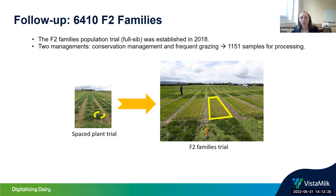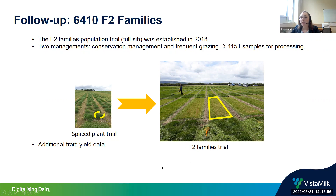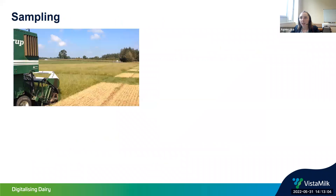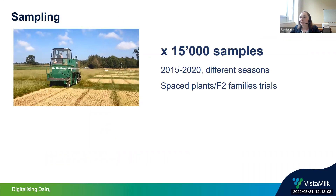We also had a follow-up F2 families trial where space plants were used to create F2 families, started in 2018. I was able to collect samples in 2020, gathering more than a thousand samples. The F2 families allow us to collect additional yield data from a whole sward — a mixture of closely related individuals in a plot — which we couldn't get from individual space plants. We also collected DNA and genotyped the plants. In total across all samples collected over five years, we had more than 15,000 samples.